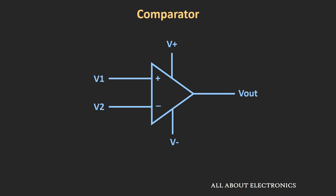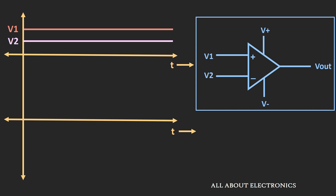Now, in the last video on comparators, we have seen that it can be used to compare two voltage levels. But the problem with this comparator is that if the input signal is noisy, in that case your output will get affected and you will not get the desired output. So let's say we have one comparator and to this comparator we have applied input signals V1 and V2.